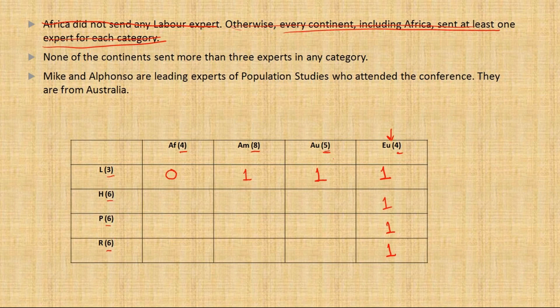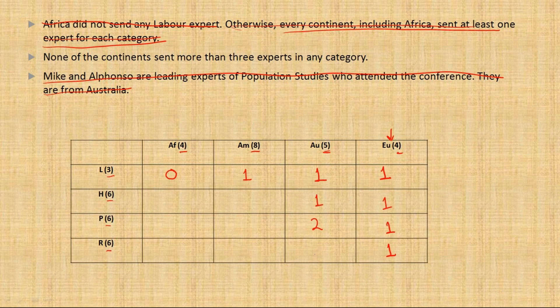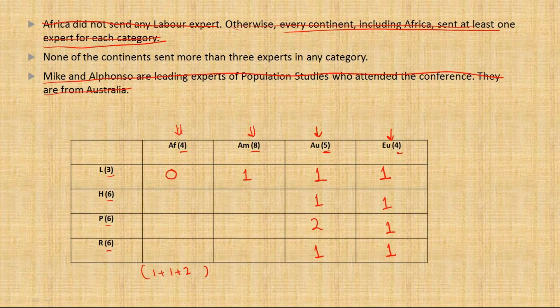Australia's column sums to 5, just one more than Europe's 4. So in the remaining three cells of Australia's column, one cell has 2 and the other two have 1 each. The third clue says Mike and Alfonso are leading population experts from Australia - so population gets 2 for Australia. The remaining two cells each get 1. Australia's column and Europe's column are now fully determined.